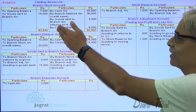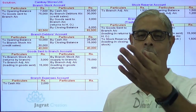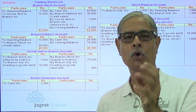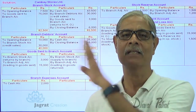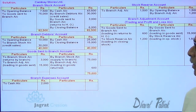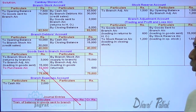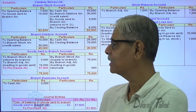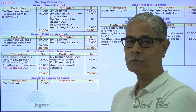The branch debtors account total also agrees at 40,000. The goods sent to branch account needs to be closed — either by transferring the balance to the trading account or to the purchase account. Here, the balance of 57,600 is transferred: goods sent to branch account debit to purchase account credit, since goods are sent to the branch out of purchases.